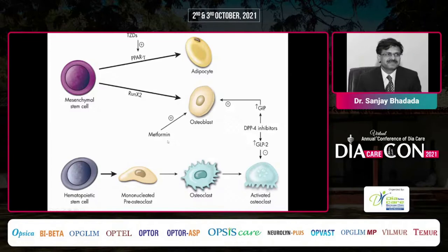This slide shows four major drugs — metformin, thiazolidinediones, DPP4 inhibitors, and GLP-1 receptor agonists — and how each of them affects osteoblasts and adipocytes.